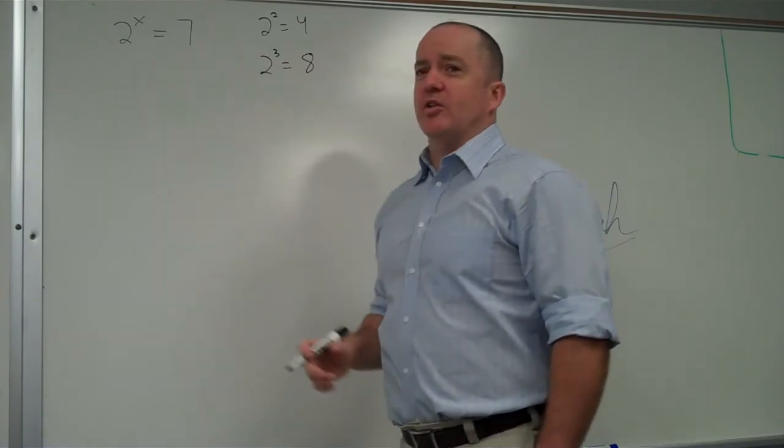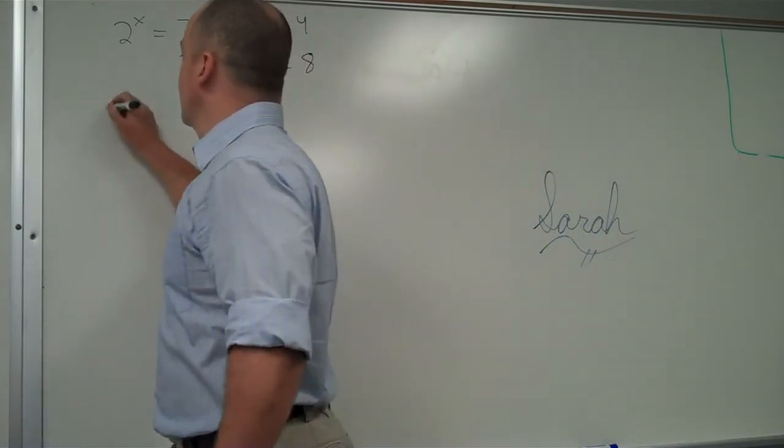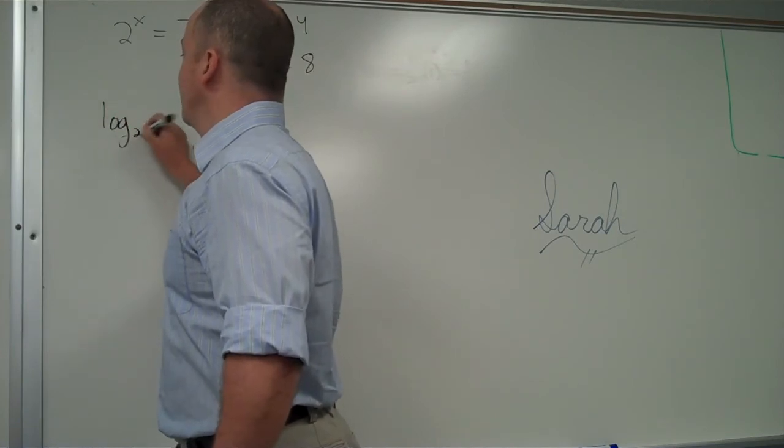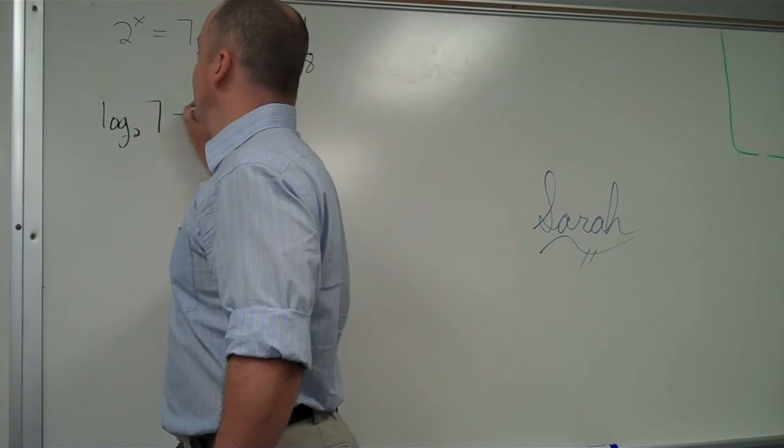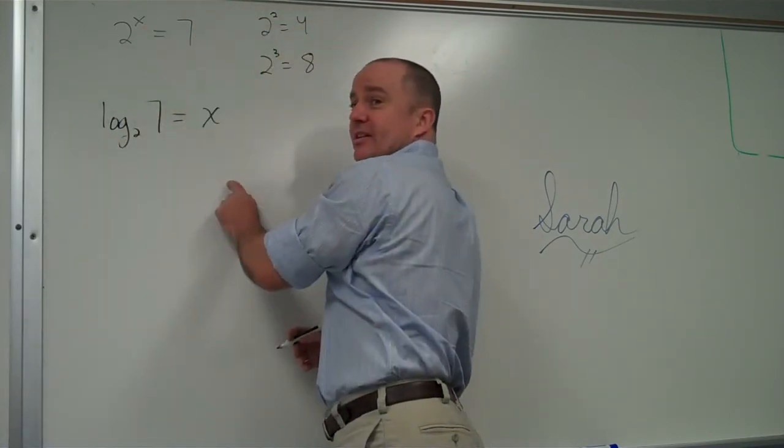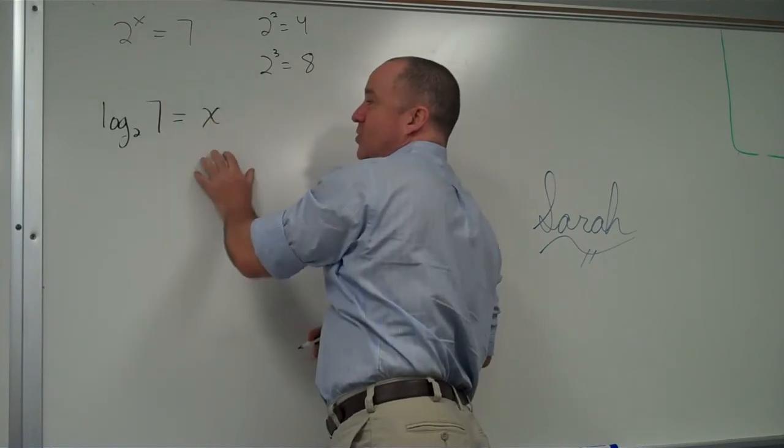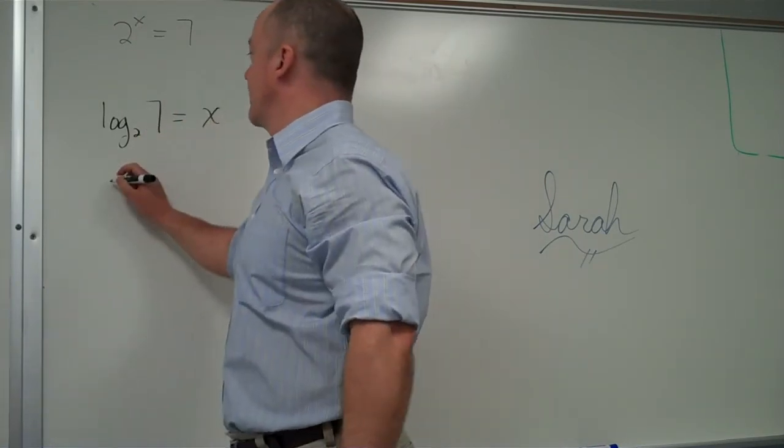How would I rearrange this into a logarithm? Desmond? Log 2x. Close. It's log base 2. That part's right. Of 7. Of 7 equals x. The answer is always the exponent. Exponent is always on the other side of an equal sign.